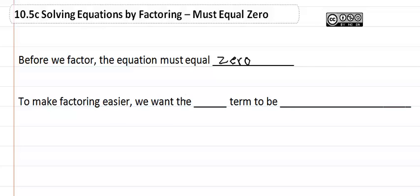To make factoring easier, we may want the x squared term to be positive, so you're going to see ones that are negative, and that means you may need to do some manipulating of your equation to make it positive.